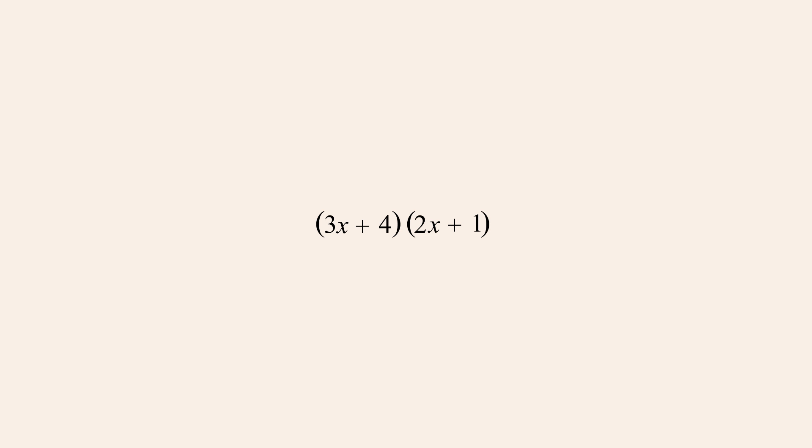These products can be created in any order as long as the individual products are formed by multiplying each term in the first binomial times each term in the second binomial. The order of multiplication we will choose is called the FOIL method.